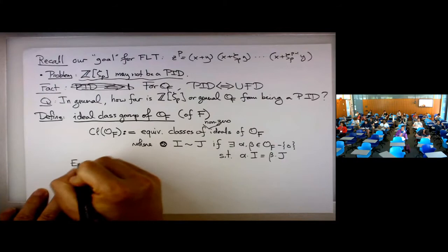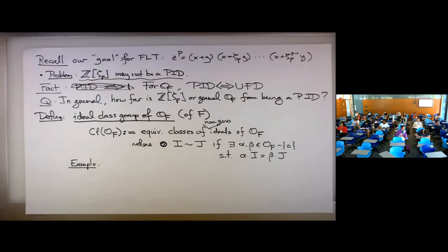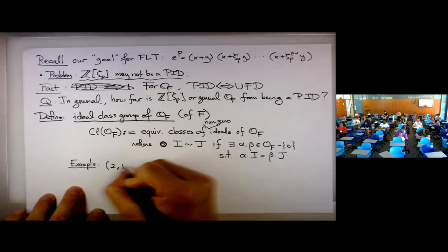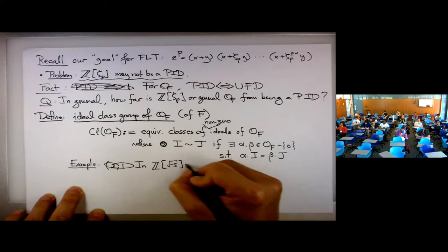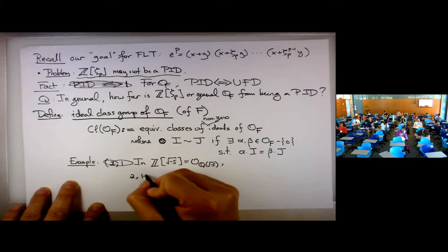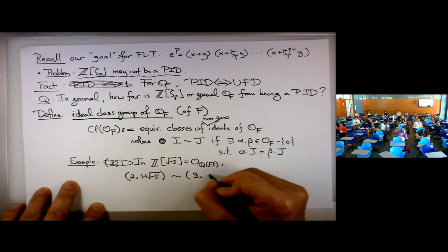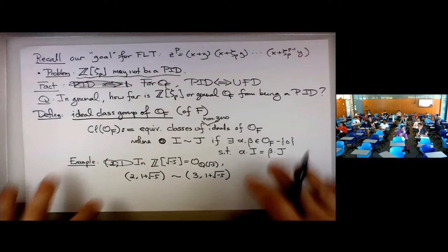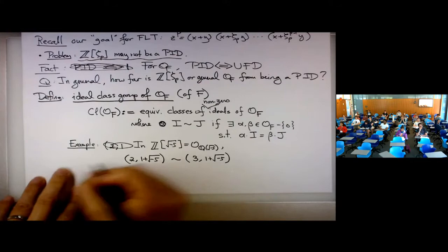Let me give an example. In Z[√-5], I have two ideals: (2, 1+√-5) and a related ideal. I want to say these two are sort of equivalent, even though they don't look like each other. This is because if I multiply (1+√-5) onto the generators of one ideal, I get (3-3√-5) and 6. And if I multiply a suitable element onto the other ideal, the resulting ideals are really the same.